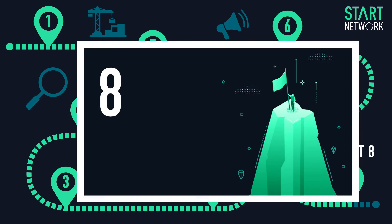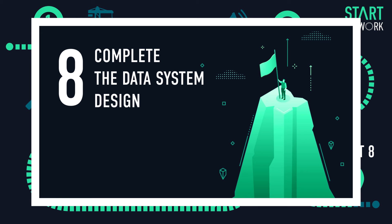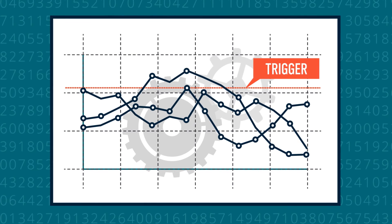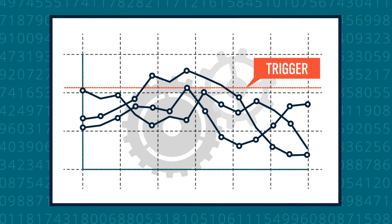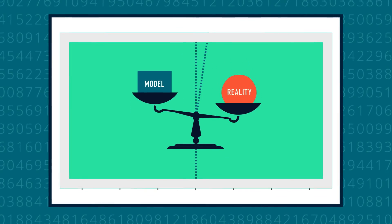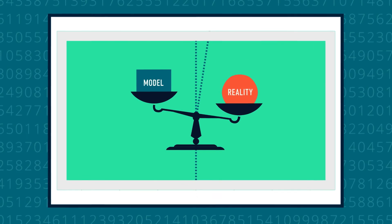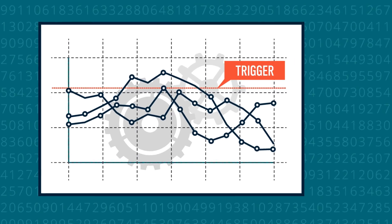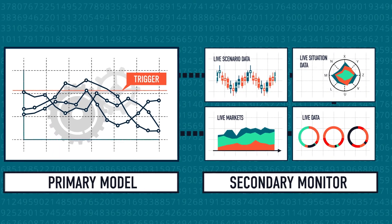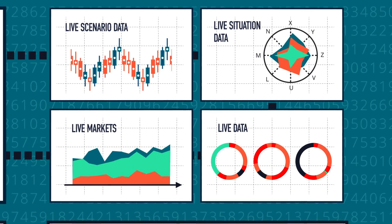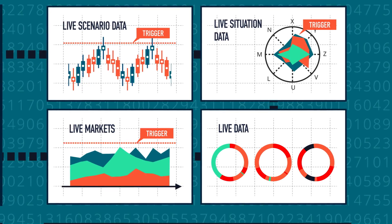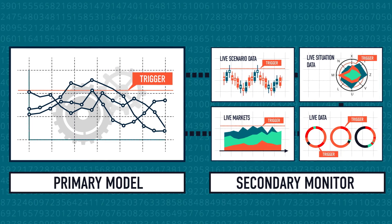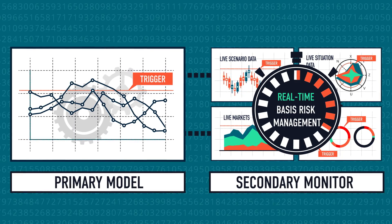Checkpoint 8: you will now have a well-designed primary model to trigger the DRF system, based on critical analysis and appropriate for the level and type of financing and response. But basis risk will never be eliminated with a primary model alone. For the system to become operational and flexible for action, the primary model must be complemented by a secondary monitor, consisting of a set of independent and near real-time data sources, potentially with secondary triggers. The secondary monitor should be compared with the primary model to manage basis risk and decision-making in real-time.